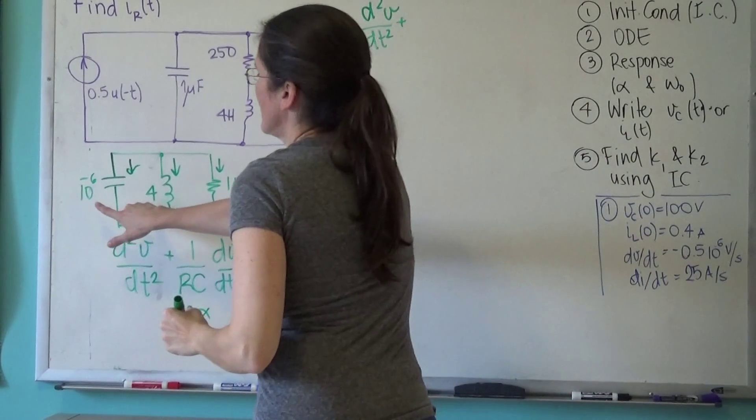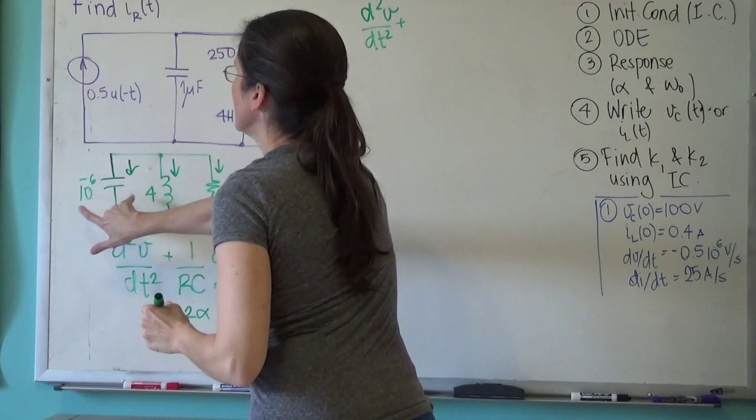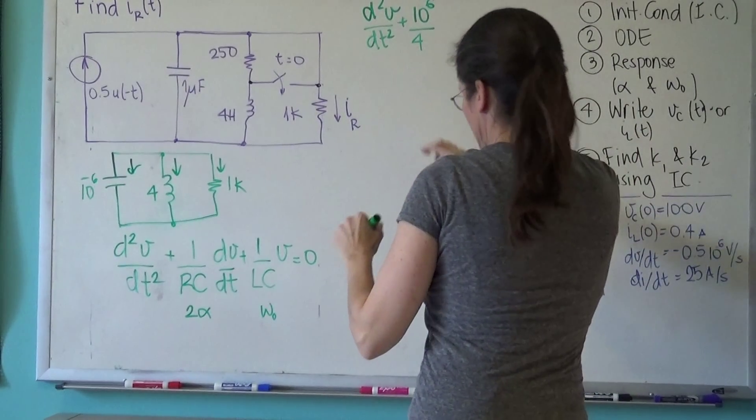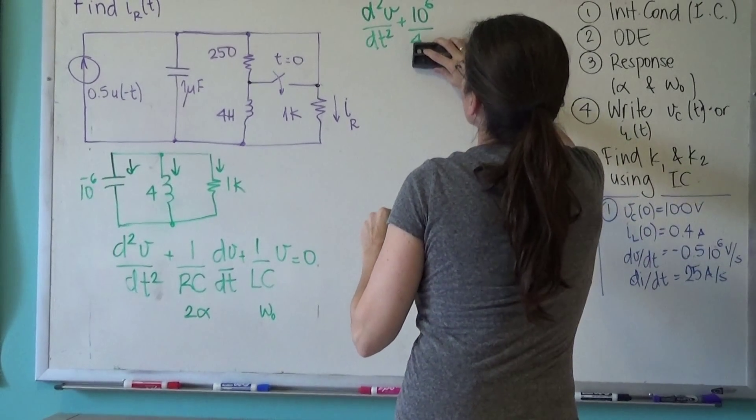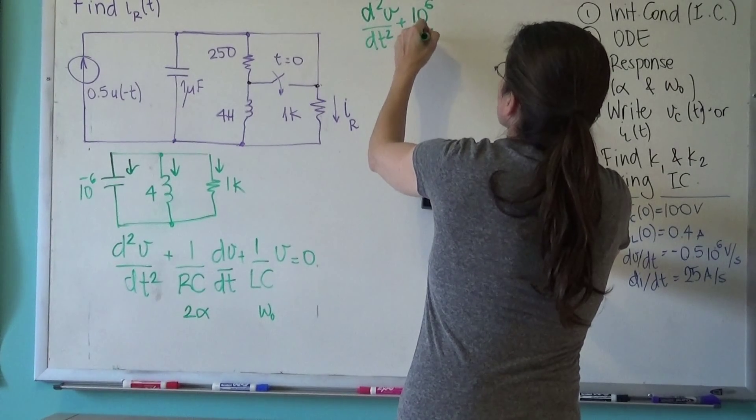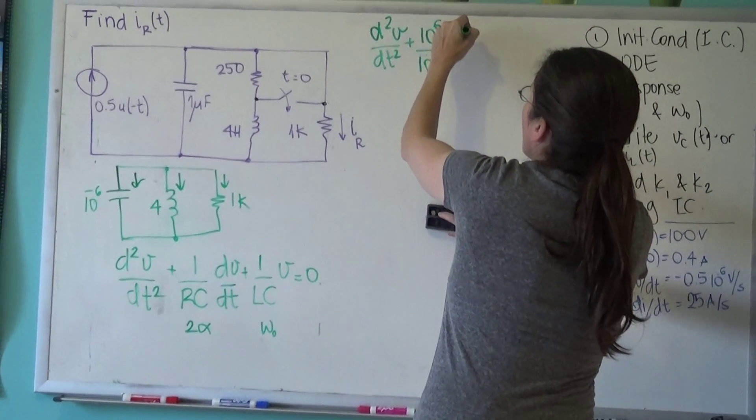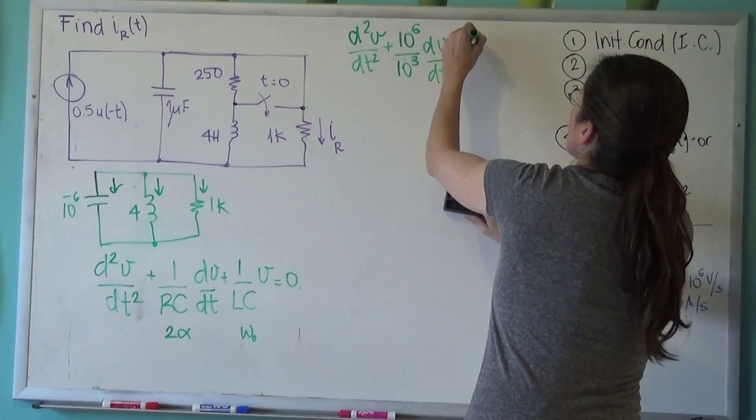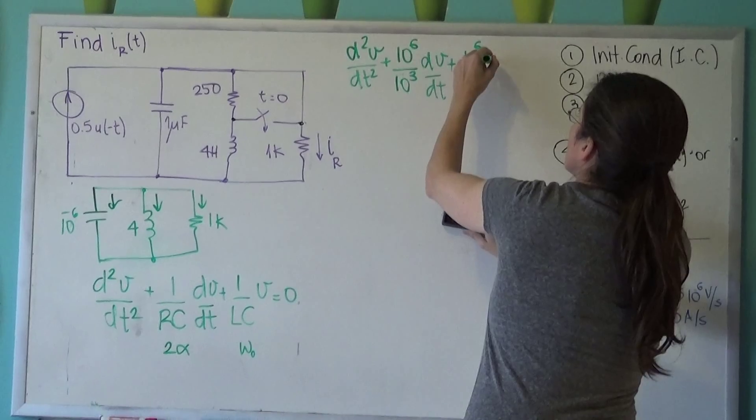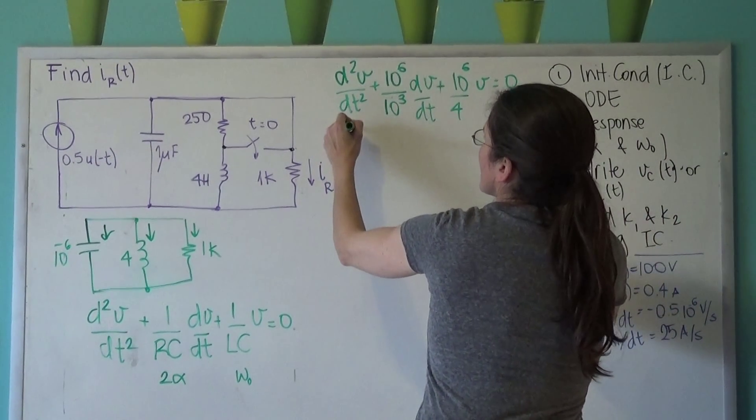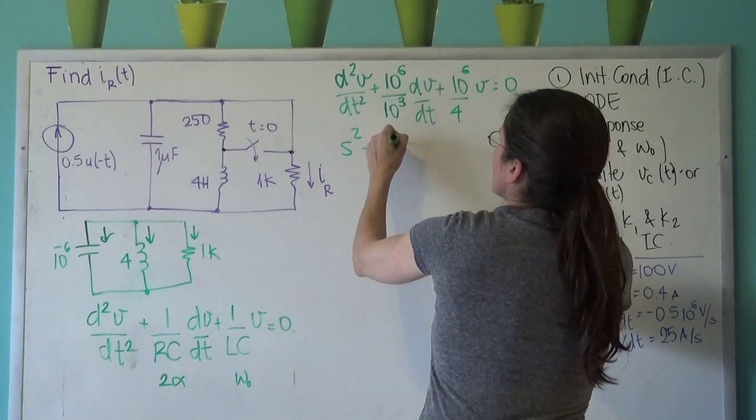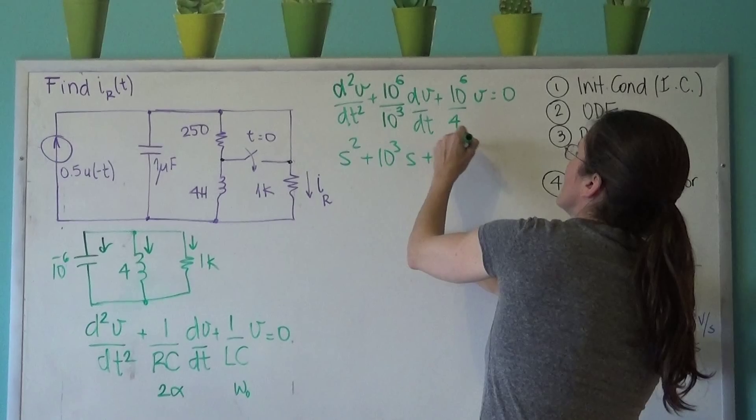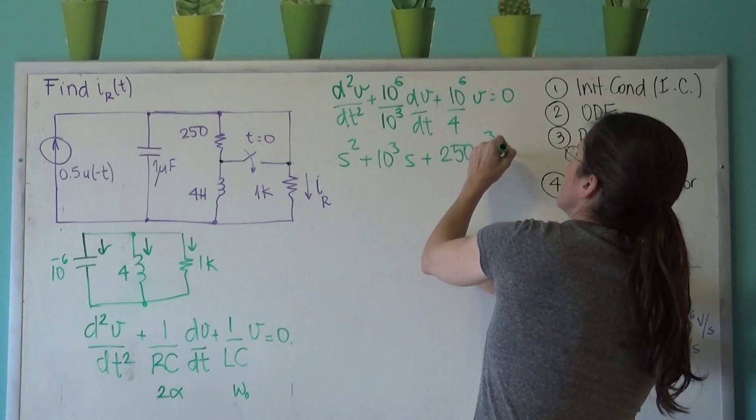So now 1 over RC is 10 to the 6 divided by 4, divided by 1K, divided by 10 to the 3. And then LC is the 10 to the 6 divided by 4. And now I can write S squared plus 10 to the 3S plus 250 times 10 to the 3 equals zero.